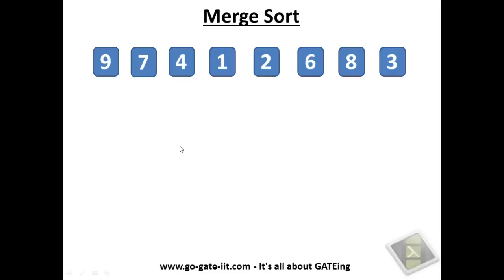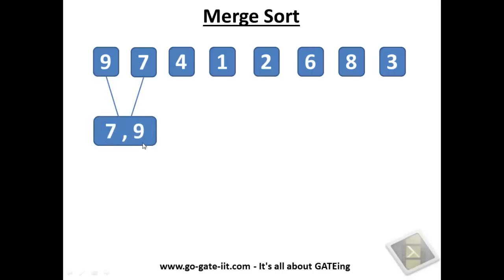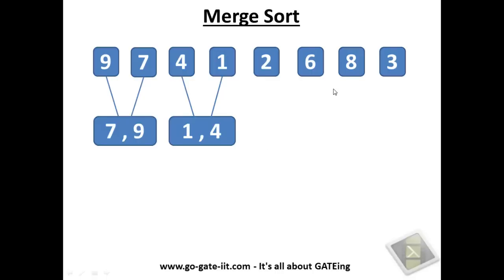We will start from left to right, that is from 9 and 7 on an even sequence. So 9 and 7 are merged together to form a single block, which will contain 7 and 9 — that is in sorted order. The same operation is repeated for the rest of the elements: 4 and 1 are merged to form the block 1 and 4. Similarly, for 2, 6 and 8, 3 — the same operation is repeated.